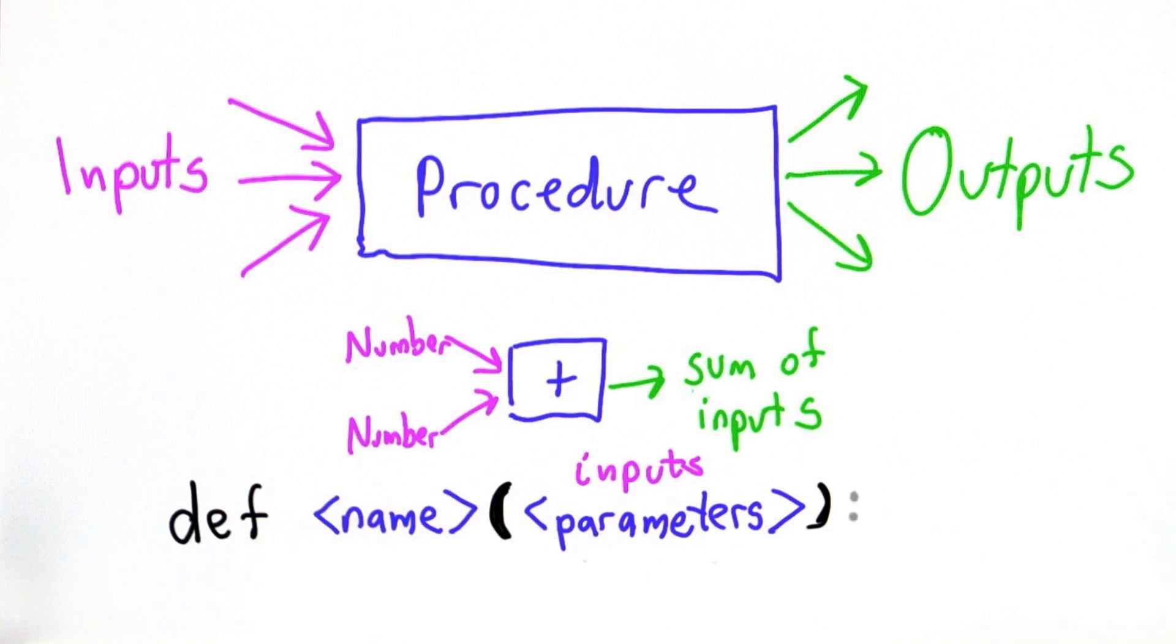After that there's a colon. This is what says we're making a procedure. It has this name, it takes these inputs. Then what we have to do is actually define the code. And so what follows that is a block. And a block is just a sequence of statements, the code that we want to run as the body of the procedure.